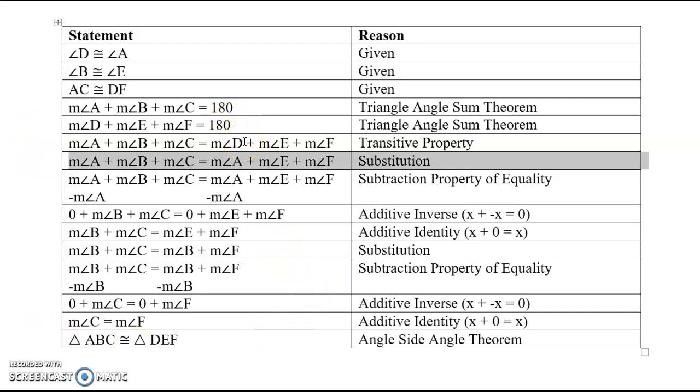This substitution step entirely depends on this first given. Because we know that angle D and angle A are congruent, we can substitute angle A for angle D. And that step is what allowed us to then use subtraction and all of our simplification steps over here.